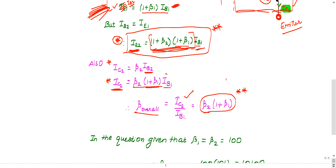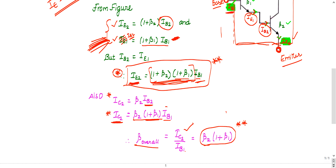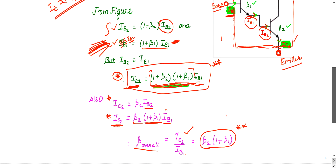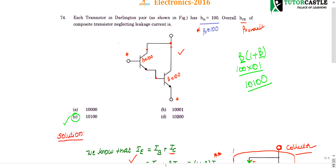So the overall beta of the Darlington pair is β2(1 + β1). Since β1 = β2 = 100, the overall beta = 100 × (1 + 100) = 100 × 101 = 10100. So 10100 is the correct answer and the right choice among the options. This is a previous year question and very important.